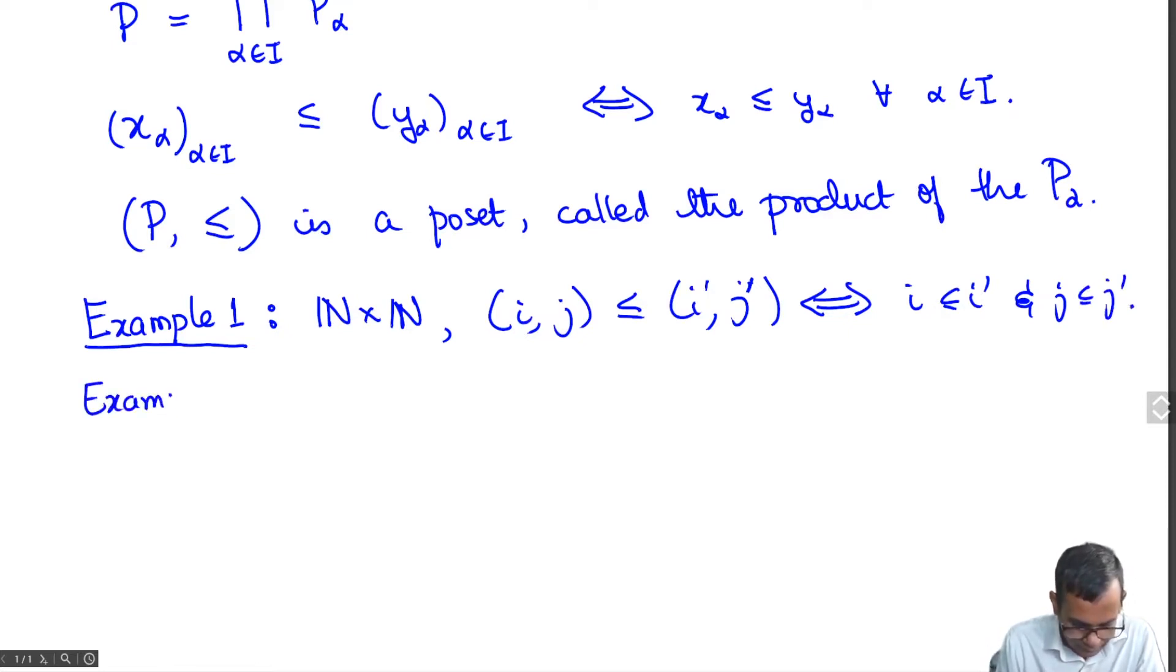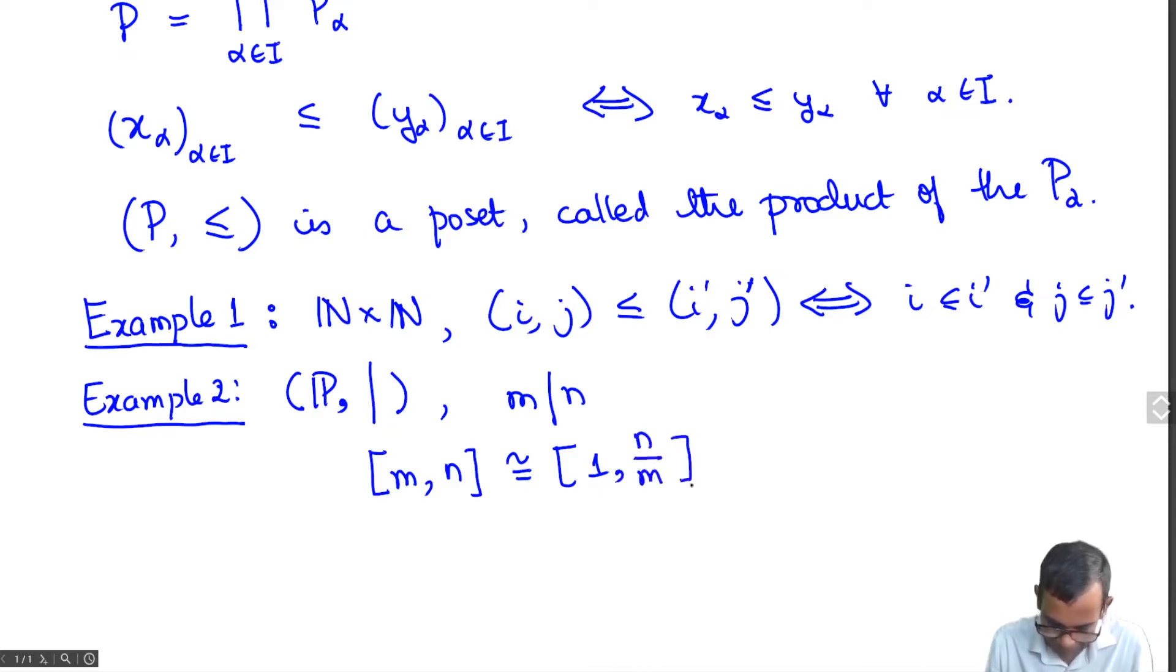Let's look at another more interesting example which is you take positive integers and the divisibility partial order. If you look at two integers m and n such that m divides n, then the interval [m,n] is isomorphic to integers which are divisible by m and divide n. But if you divide those integers by m, you just get all the integers which divide n/m.